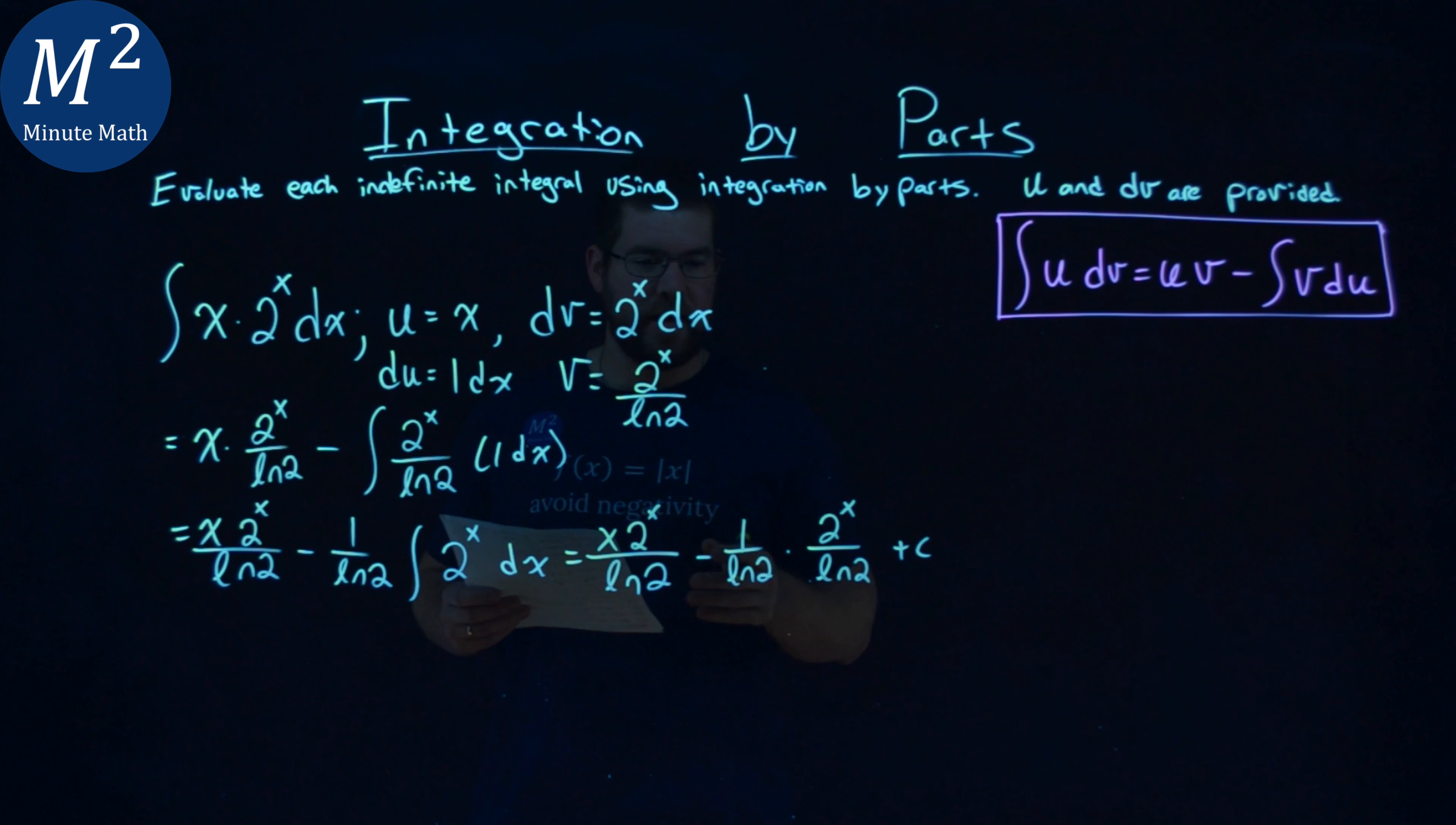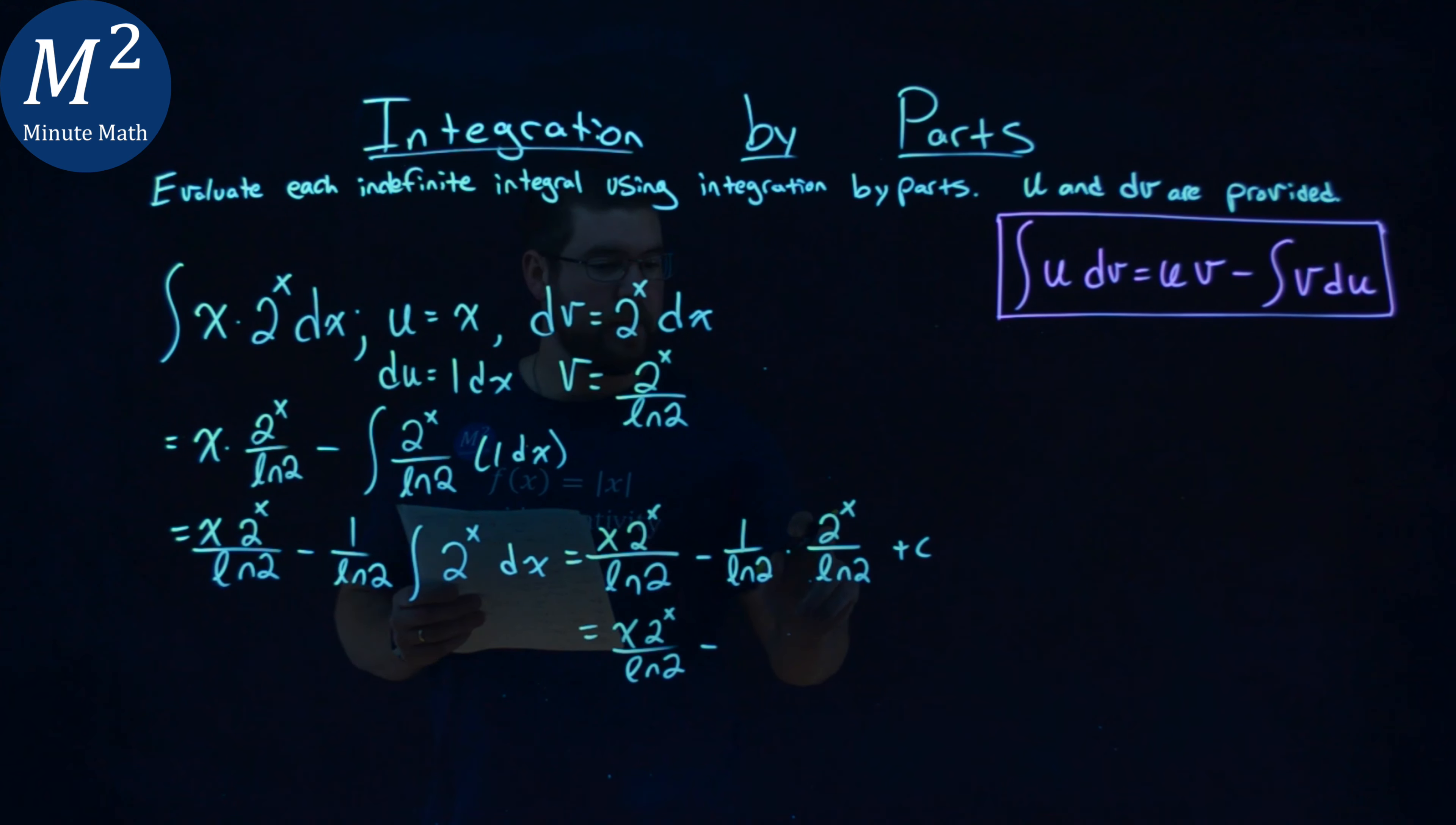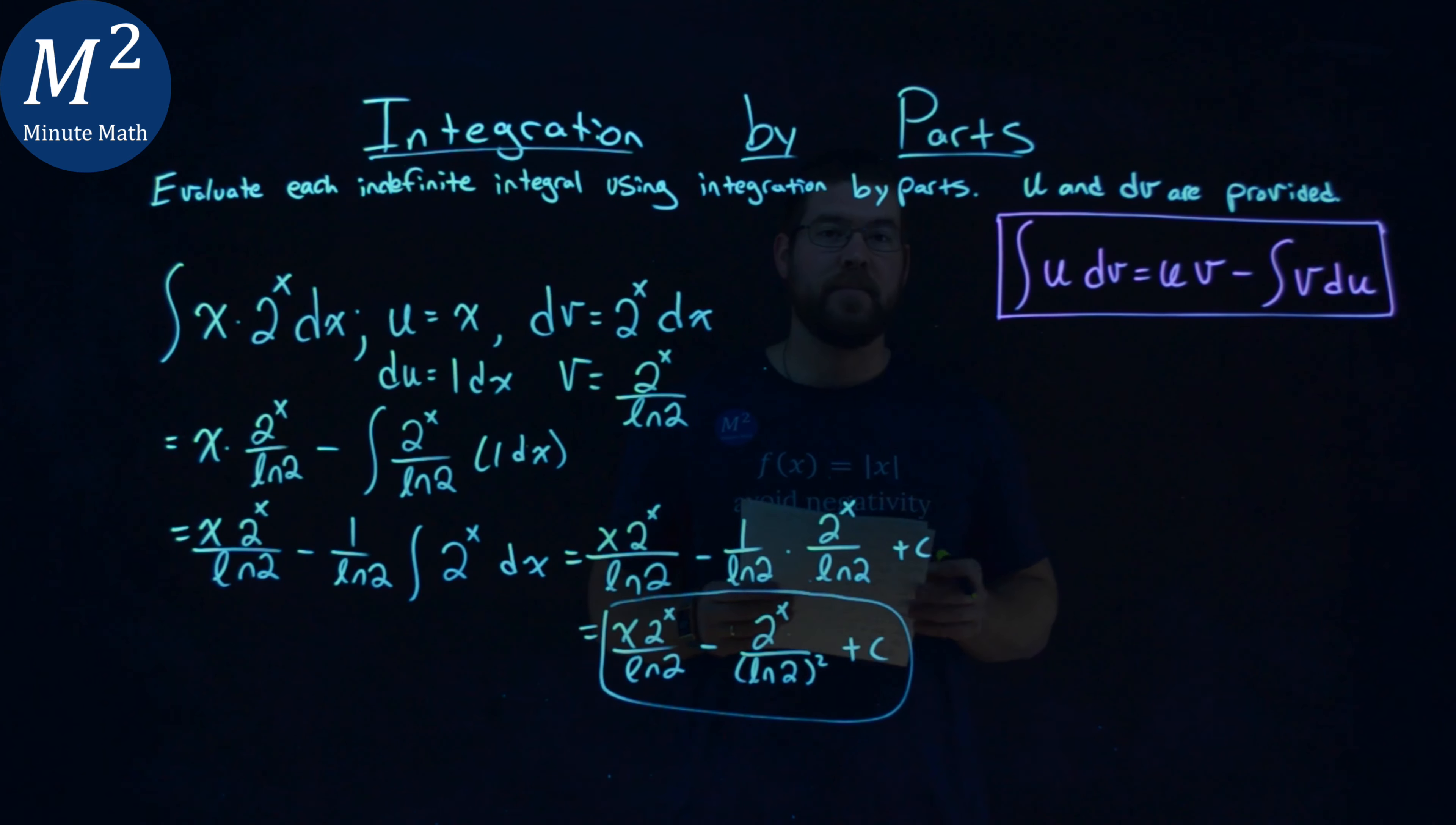Now, let's go simplify this up a little here. We have x times 2 to the x power over natural log of 2, minus, combine this, we have 2 to the x in the numerator, the denominator is natural log of 2 all squared. And then we have a plus c. And that's it. My final answer here for this integral is x times 2 to the x power over natural log of 2, minus 2 to the x power over natural log of 2 squared, plus c.